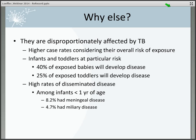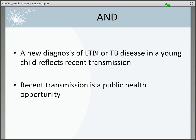In addition to higher rates of disease, children also have higher rates of dissemination. Among babies less than one year of age with TB disease, 8.2 percent have meningeal disease — meaning the bacteria affects the lining cells of the brain and spinal cord — and almost 5 percent have miliary disease, which is a bacteremic form of the infection. Additionally, a new diagnosis of latent TB infection or TB disease in a young child reflects recent transmission, meaning some adult or adolescent in the community has recently been coughing, singing, laughing, or sneezing TB germs into the air. This makes the diagnosis a public health opportunity — what we call a sentinel event.